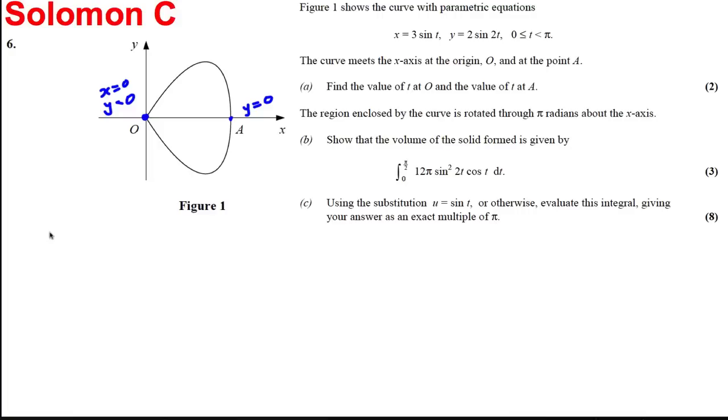For part (a), let's make y equals 0. So we're solving 2sin(2t) = 0, i.e., sin(2t) = 0. Therefore 2t equals 0, π, or 2π. We want 2t between 0 and π, so we're going to double up here to find all the places where it equals 0.